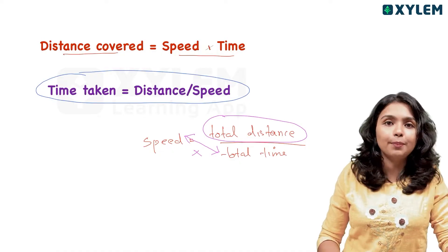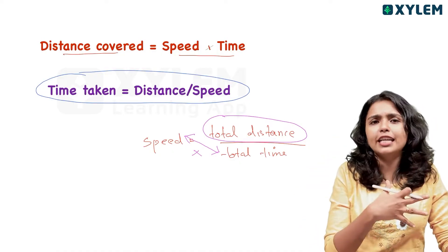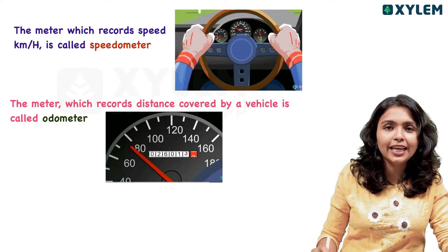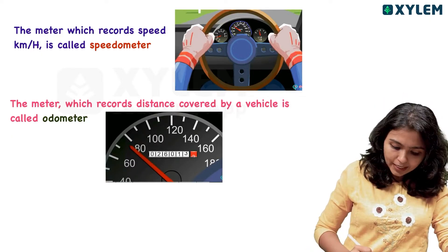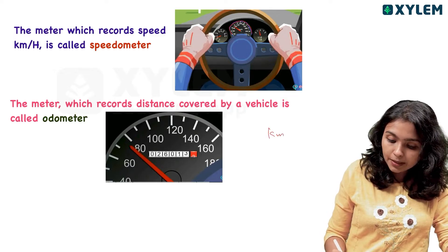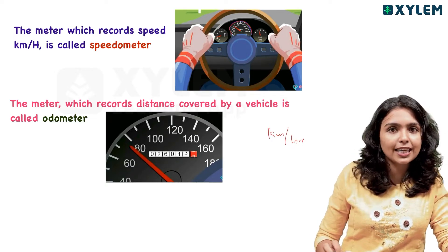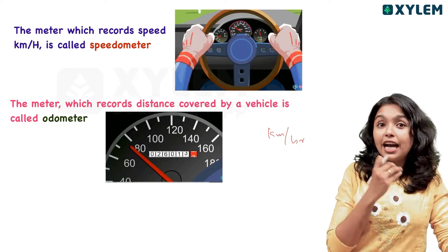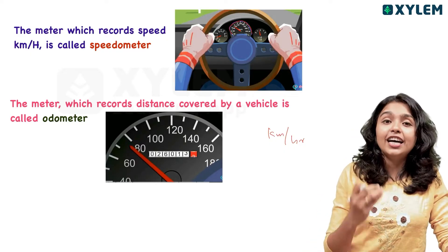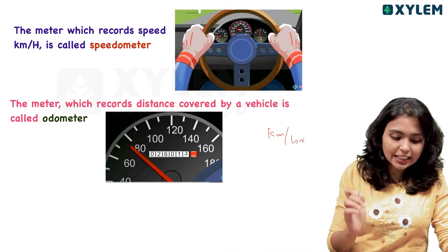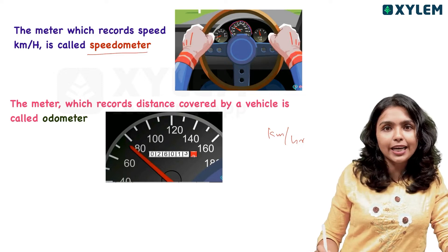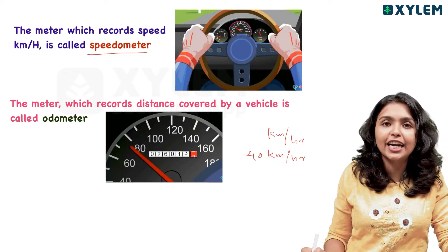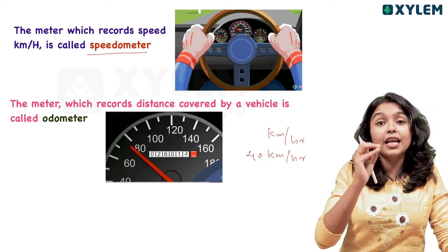How do we calculate speed in practice? You can use a motorcycle or a car. You can use a meter on the car's dashboard. The unit of speed can be kilometer per hour. We can measure speed by the vehicle's speedometer. For example, 40 km per hour — if a vehicle on the road shows 40 km per hour, you read that from the meter.